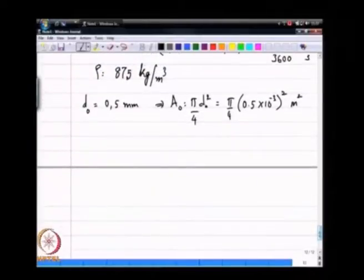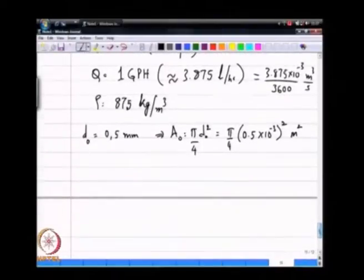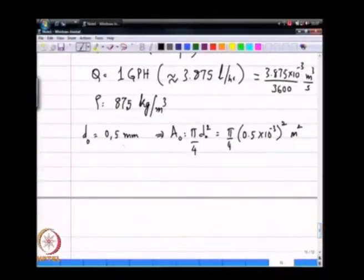Q in these same units is 3.875 into 10 power minus 3 divided by 3600 meter cubed per second. My first step was to start by assuming an r0. I have done that. I have chosen a d0 of 0.5 mm.